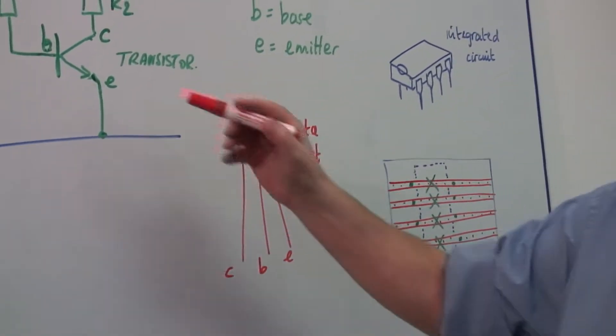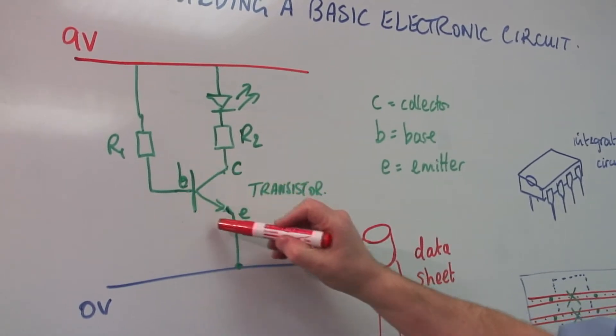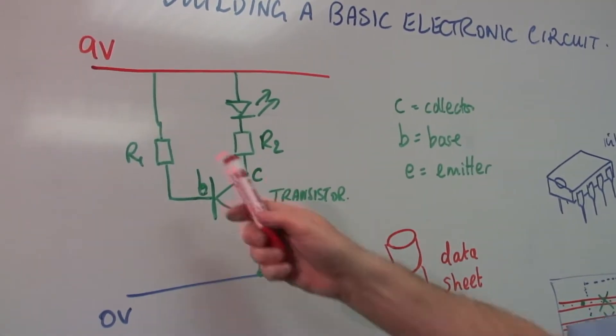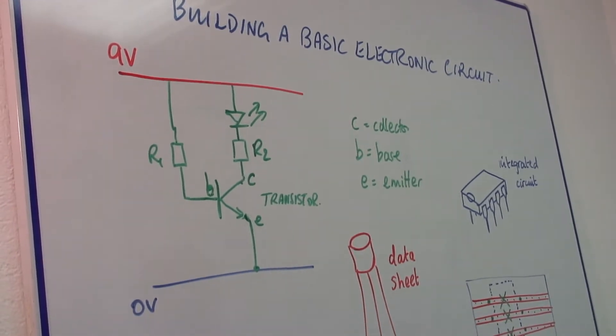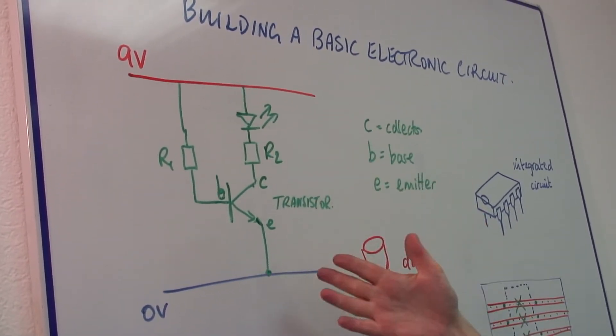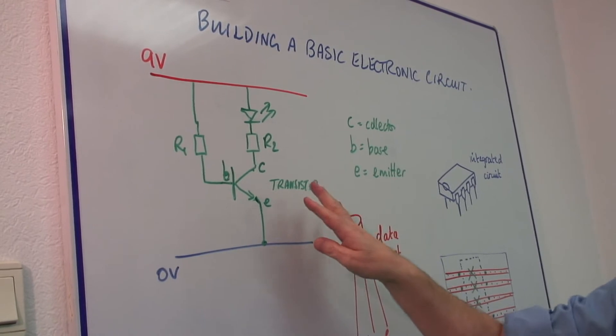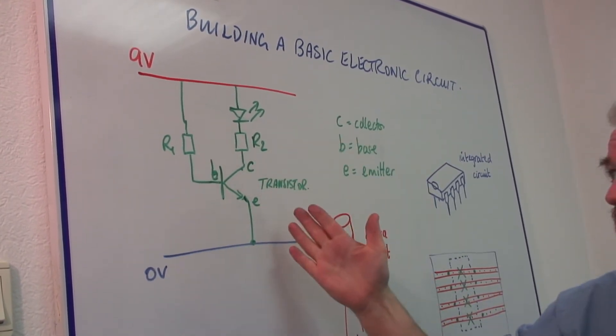So here is my transistor, C, B and E. And the only other components I'm using here are two resistors and a light emitting diode. So this is a circuit which would show you how to use a transistor.